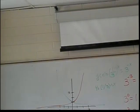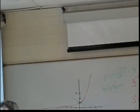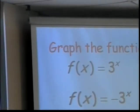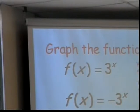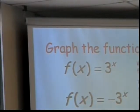What does the negative out front do to it? So if we make it negative 3 to the X, what is that going to do to the graph? So the red graph is what we're talking about now. Yeah. A negative out front flips it over to the X axis.